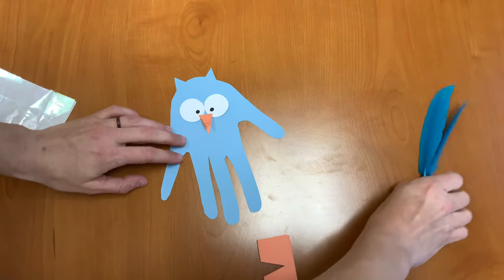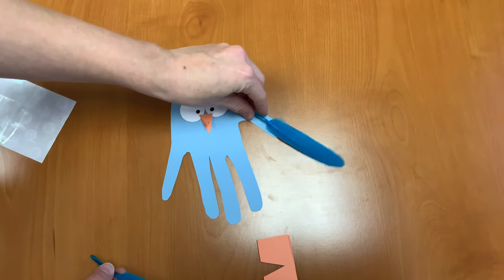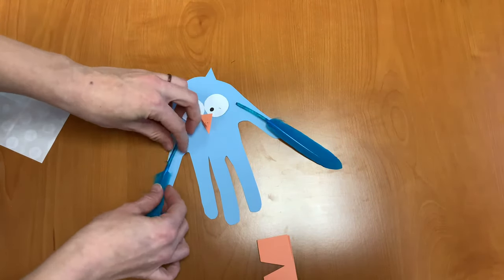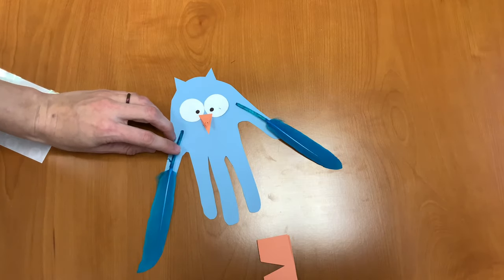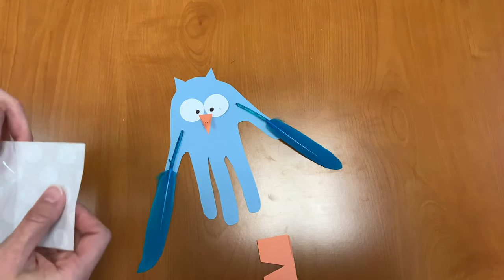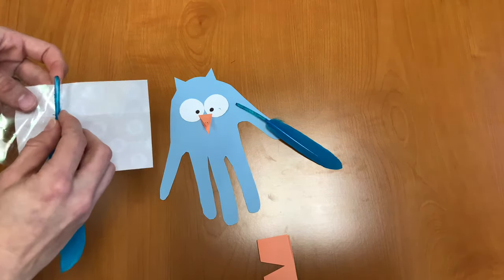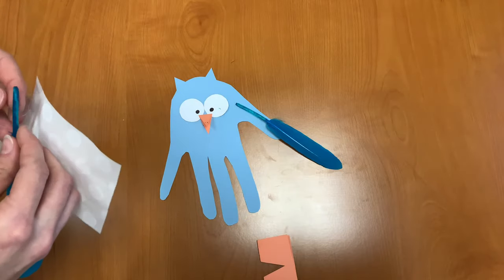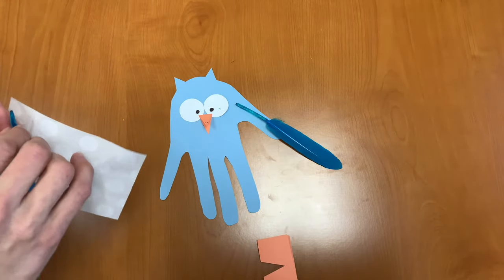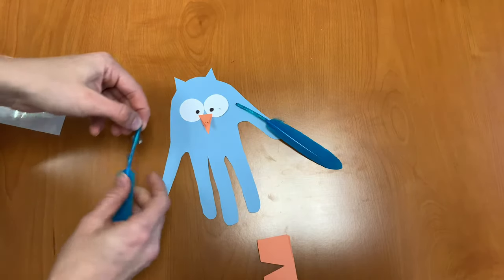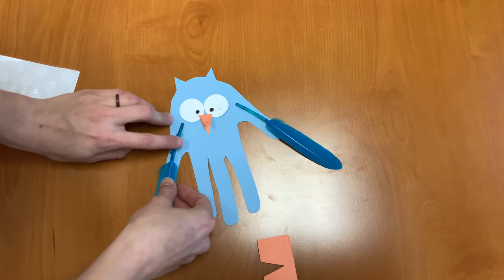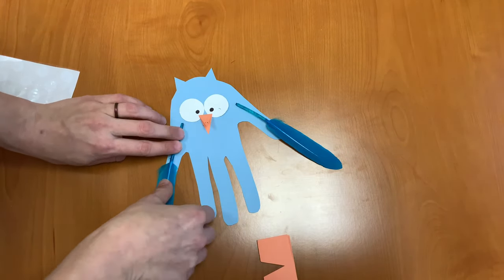The last step is to take our two feathers and we're going to glue them to the arms of our owl. So using glue dots again, we'll just take the glue dots, stick it on the stem, and stick it right to your owl.